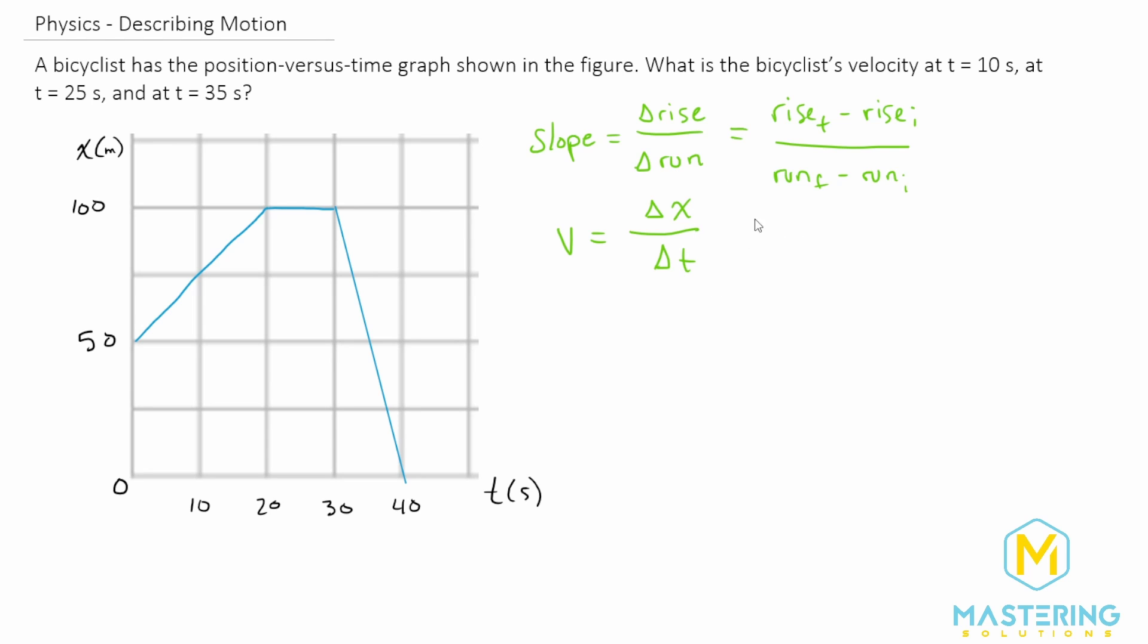We could of course rewrite this so it's x final minus x initial over t final minus t initial, but it's the same thing just worded differently.